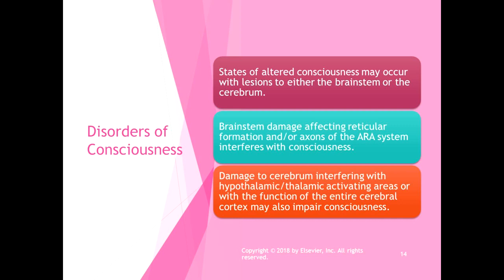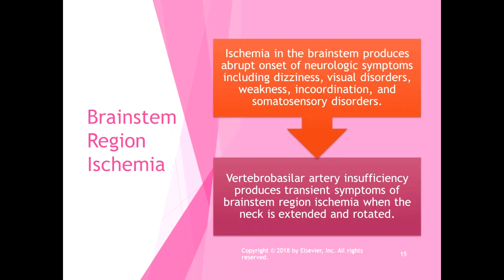Ischemia in the brainstem usually produces abrupt onset of neurological symptoms including dizziness, visual disorders like diplopia, weakness, incoordination, and somatosensory disorders — because all those tracts pass through the brainstem. The vertebral basilar artery supplies the brainstem, and insufficiency of that artery can produce transient brainstem ischemia symptoms when the neck is extended and rotated. If you experience dizziness, double vision, and weakness with neck extension and rotation, go to the ER — that is serious.